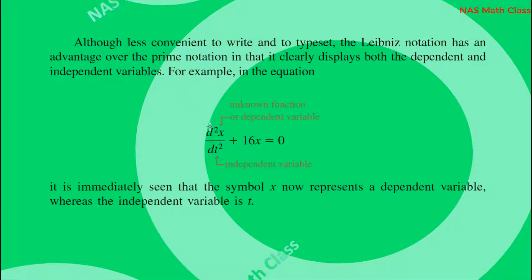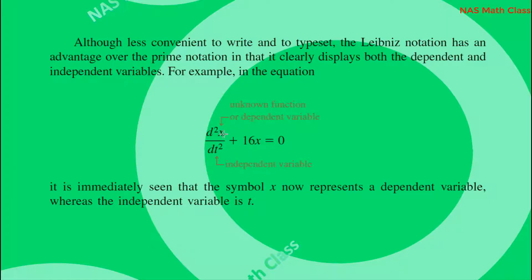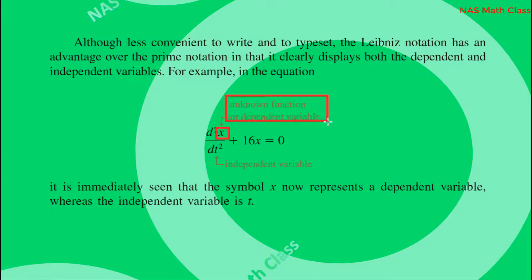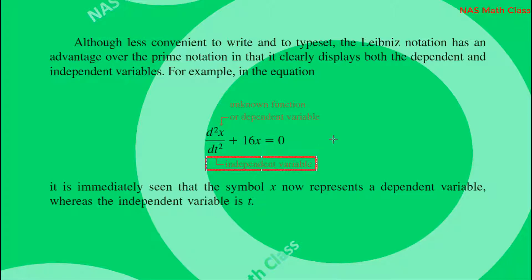For example, consider a differential equation d²x/dt². In Leibnitz notation, from this equation we can clearly see that x is the dependent variable or unknown function, and t is the independent variable.